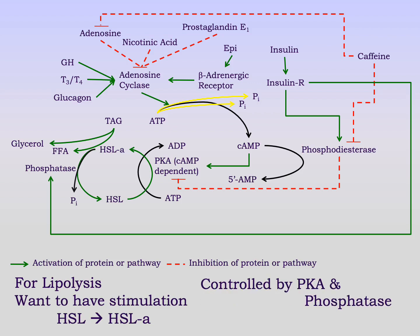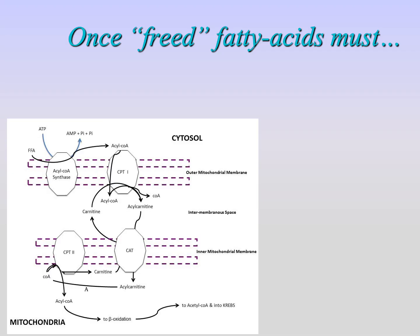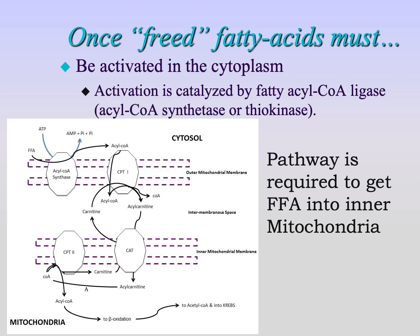To summarize: if we want lipolysis, we want to stimulate hormone-sensitive lipase, which is controlled by PKA for activation and phosphatase for inhibition. Once we've freed that fatty acid from the lipid, we have to get it across the mitochondrial membrane using an acetylation reaction, transporting it via a carnitine molecule from the outer membrane to the inner membrane, and allowing that acetylated fatty acid to enter the beta-oxidation pathway.